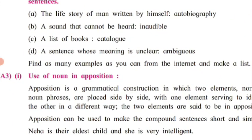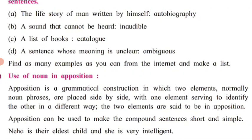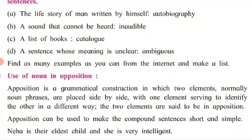Next is the use of noun in apposition. Some care is needed while understanding this point. Apposition is a grammatical construction in which two elements, normally noun phrases, are placed side by side with one element serving to identify the other in a different way. The two elements are said to be in apposition. Apposition can be used to make a compound sentence short and simple. For example: 'Neha is their eldest child and she is very intelligent.' How can it be converted by applying apposition? Let us see.